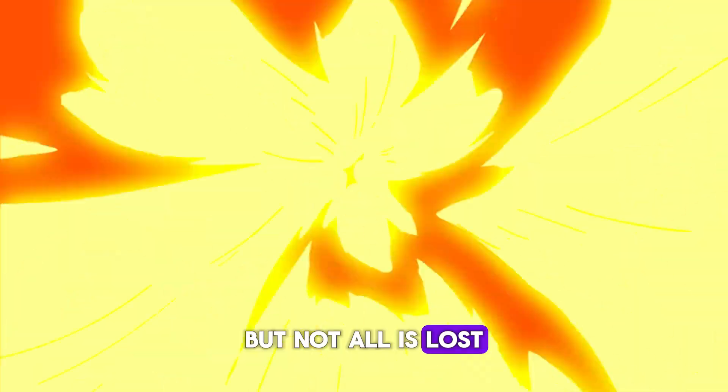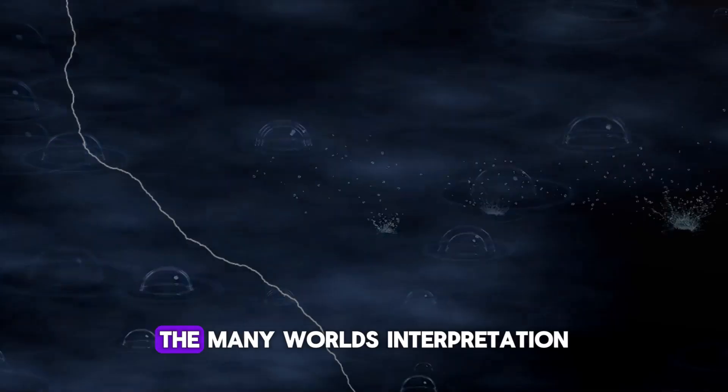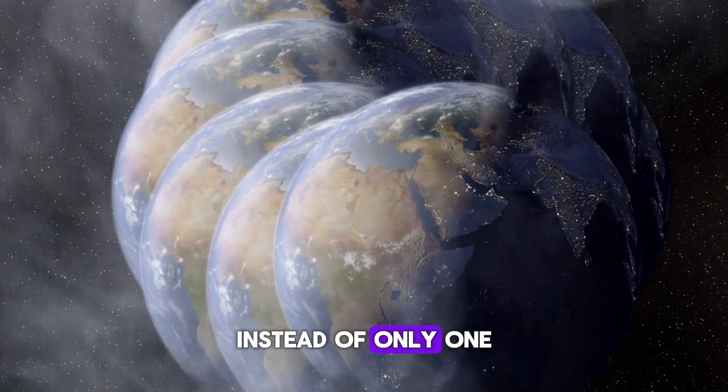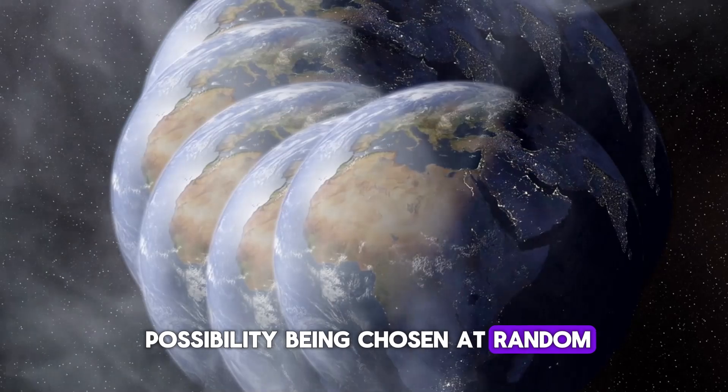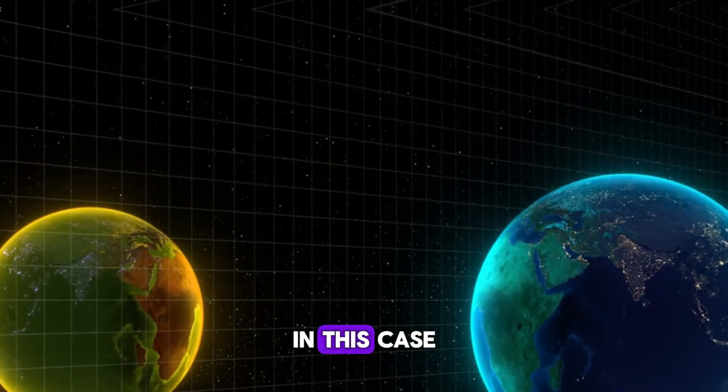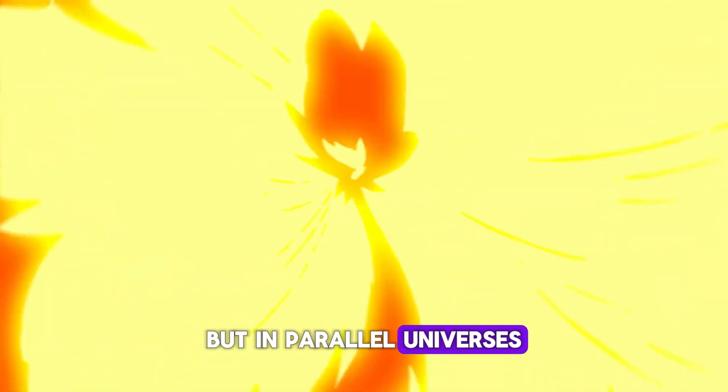But not all is lost. There is another one, more widely accepted and even crazier, the many worlds interpretation. It states that when the superposition is broken, instead of only one possibility being chosen at random, the universe splits in all the possible outcomes. In this case, the cat is both alive and dead, but in parallel universes. I swear I'm not making this up, this is solid science.